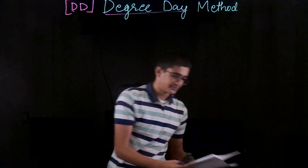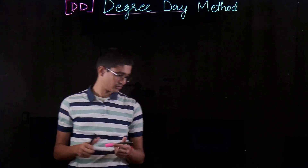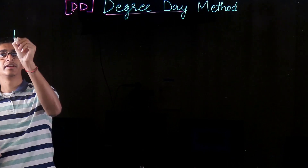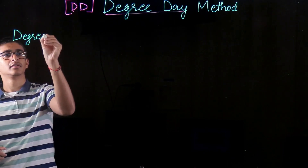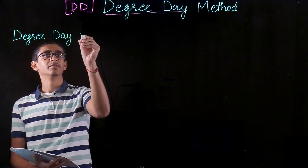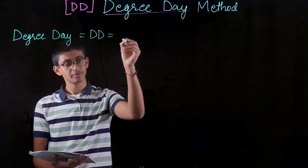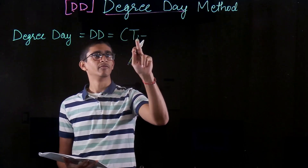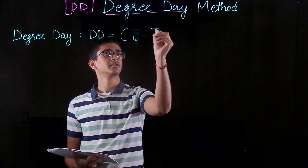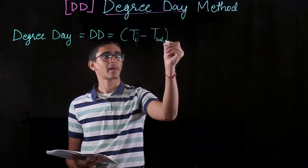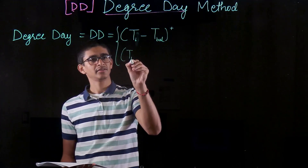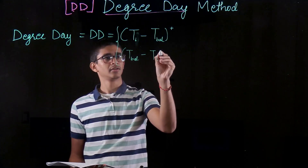Starting with the basics, the first formula to understand is degree days. The degree day formula is: DD = (T_i − T_balance)₊ for heating, or DD = (T_balance − T_i)₊ for cooling.